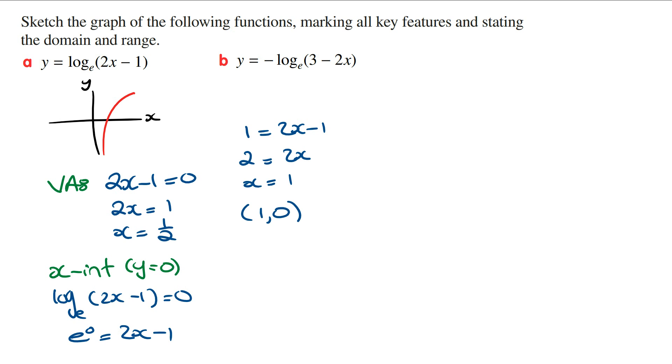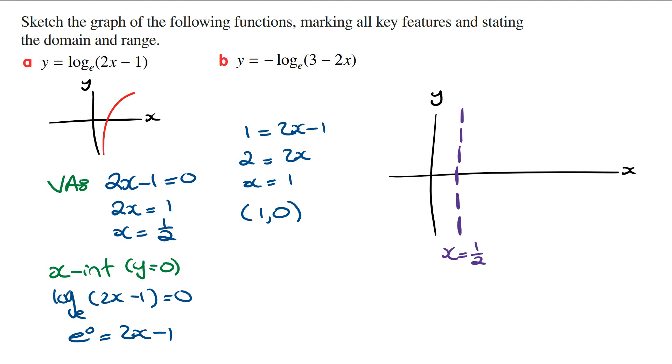Drawing the x and y axes, we mark the vertical asymptote with a dashed line and write down its equation. We mark the coordinates of the x intercept and then sketch the graph.